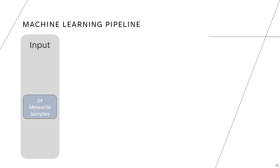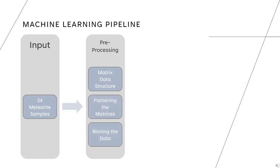We then went through preprocessing of our raw data, which meant creating a matrix structure that represented each of our samples and simplifying that structure in order to perform machine learning tasks.